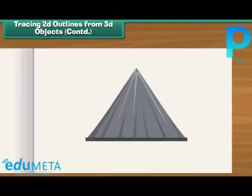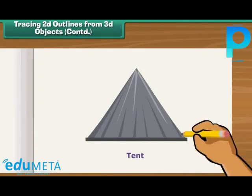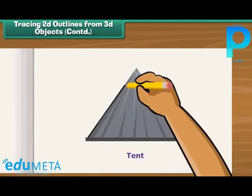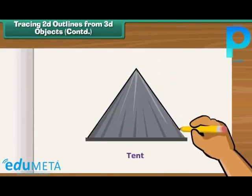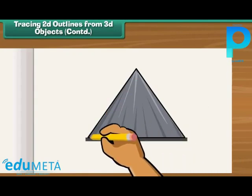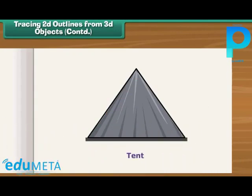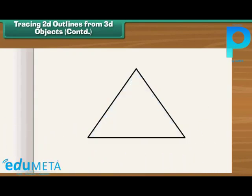Place a miniature tent on a sheet of paper. Draw a line along its outer edge. Remove the tent — you can see a triangle on the sheet.